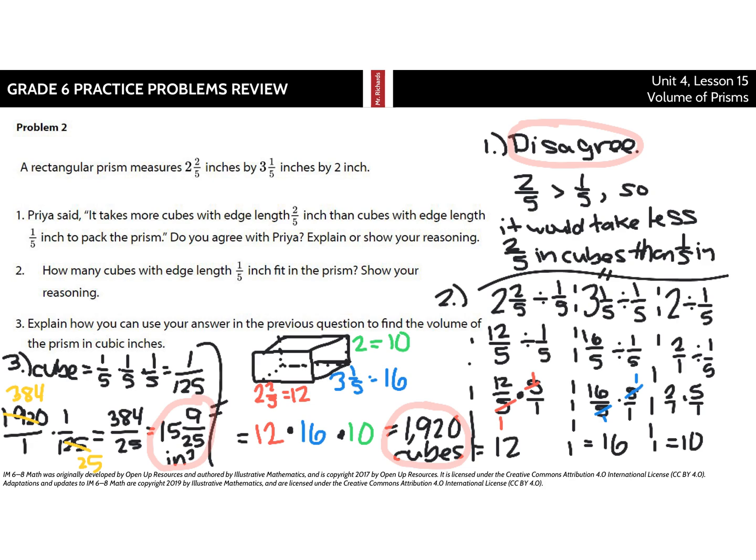So, question three, explain how you can use your answer in the previous question, one thousand nine hundred twenty, to find the volume of the prism in cubic inches. Well, if we find the volume of each individual cube, we can do that by taking one-fifth times one-fifth times one-fifth to get one one-twenty-fifth. If the total number of cubes numbered one thousand nine hundred twenty, and each of those cubes had a volume of one one-twenty-fifth, you can multiply out to find out what the volume is. I cross-simplified here by dividing by five, and you get 384 twenty-fifths.